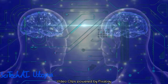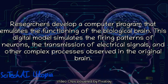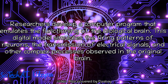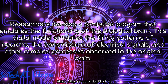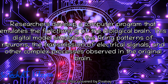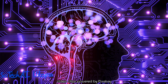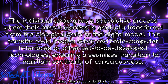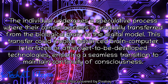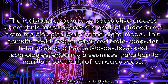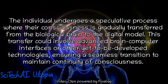The digital model is designed to emulate the functionality of the biological brain. This includes simulating the firing patterns of neurons, the propagation of electrical signals, and the complex interactions that give rise to thoughts, memories, and consciousness. The emulation aims to replicate the cognitive processes of the original biological brain. Once the digital model is sufficiently advanced, the next step is to transfer the individual's consciousness from the biological brain to the digital substrate. The digital consciousness, now residing in a computational environment, would need interfaces to interact with the external world.